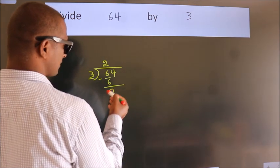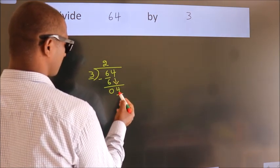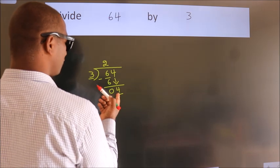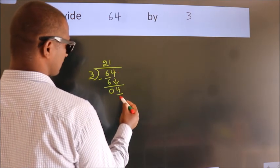After this, bring down the beside number. So, 4 down. A number close to 4 in the 3 table is 3 times 1, which is 3.